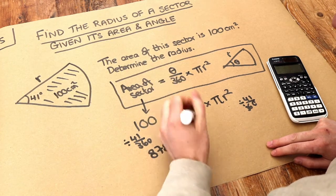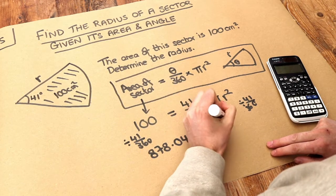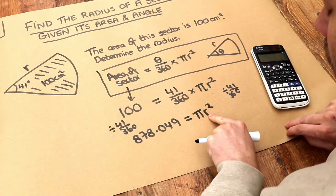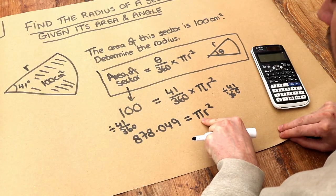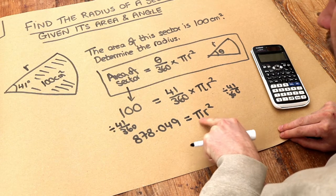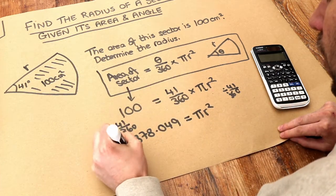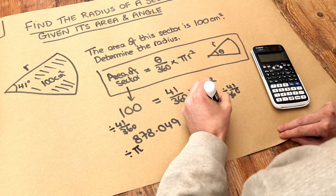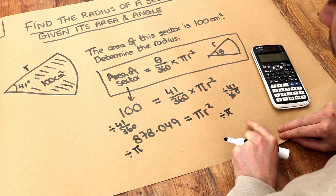Dividing by the 41 over 360 gets rid of that. We're just left with the pi r squared. Now if you think about it, R is being squared then it's been multiplied by pi. We want to get rid of that times by pi, so we're going to divide both sides by pi. Do not at this stage square root both sides, because R is first squared then you multiply by pi.